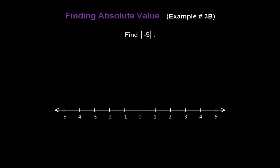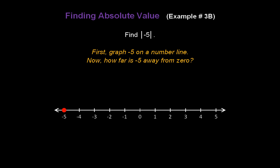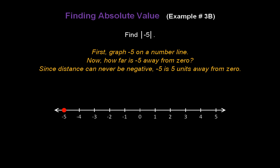Let's find the absolute value of a negative number — the absolute value of negative 5. First, graph negative 5 on a number line. Now, how far away is negative 5 from zero? Since distance can never be negative, negative 5 is a positive 5 units away from zero. So, the absolute value of negative 5 is 5.